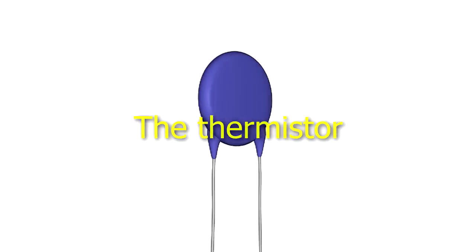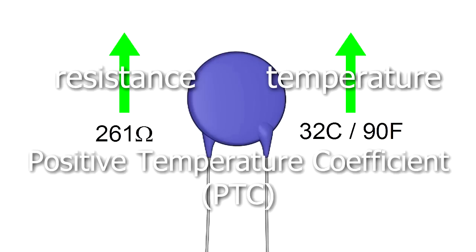What's a thermistor? The thermistor is usually a ceramic or polymer material with two wires connected to it. The key is that the thermistor's resistance changes with temperature. With some, the resistance increases as the temperature increases. Those are called positive temperature coefficient, or PTC thermistors.